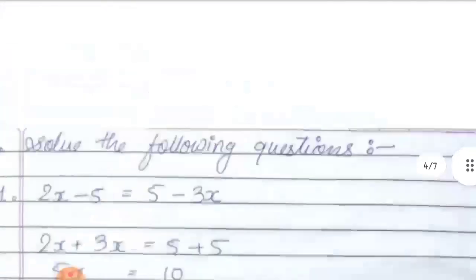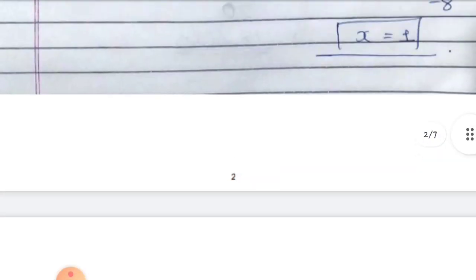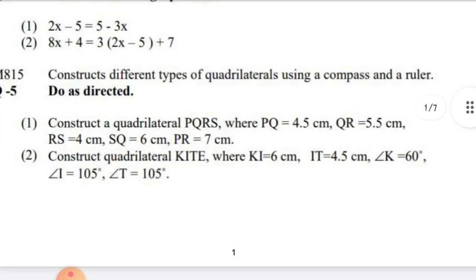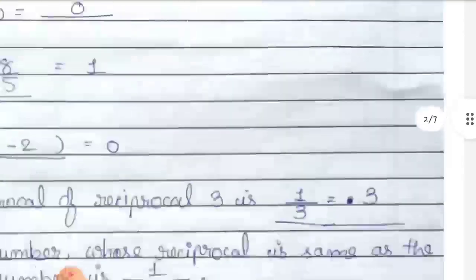Next question number 2: construct quadrilateral KITE where KI is equal to 6 cm, IT is equal to 4.5 cm, angle K is equal to 60 degrees, angle I is equal to 105 degrees, and angle T is equal to 105 degrees. This is taken from exercise 4.3. You have to rename the quadrilateral as KITE.